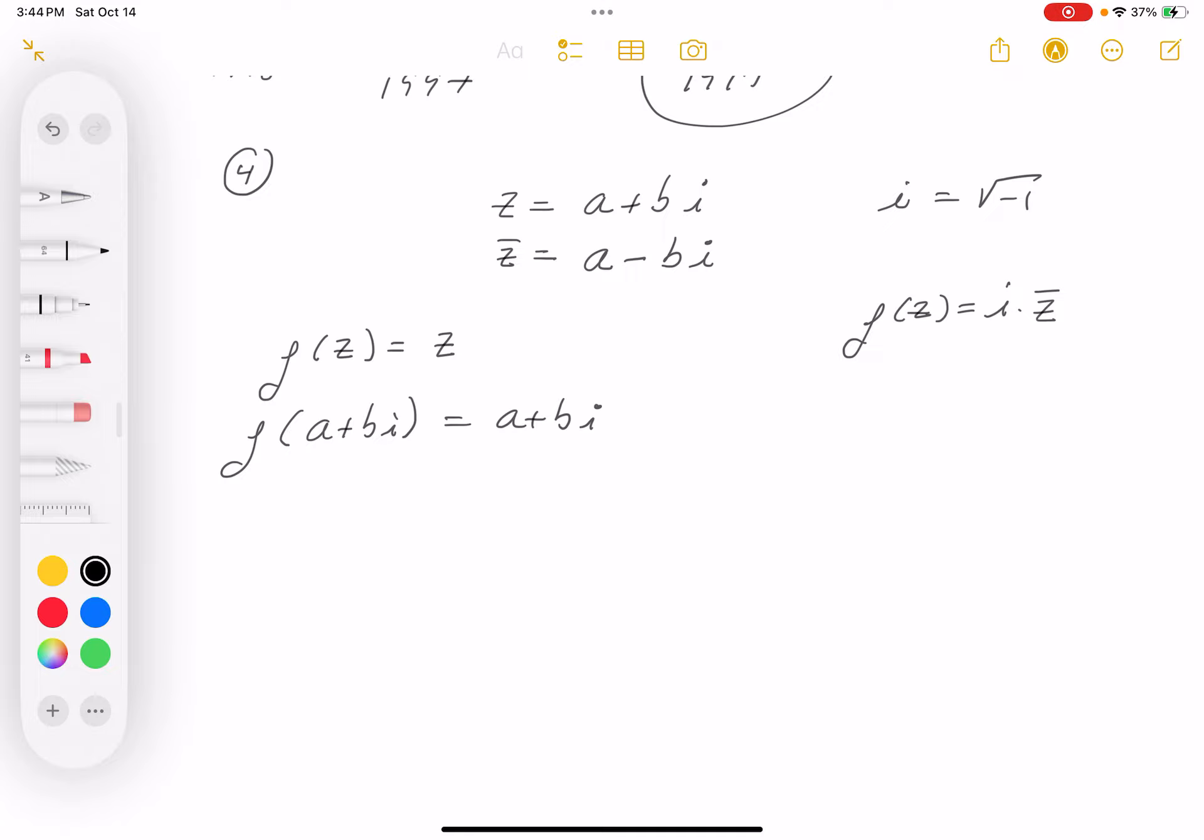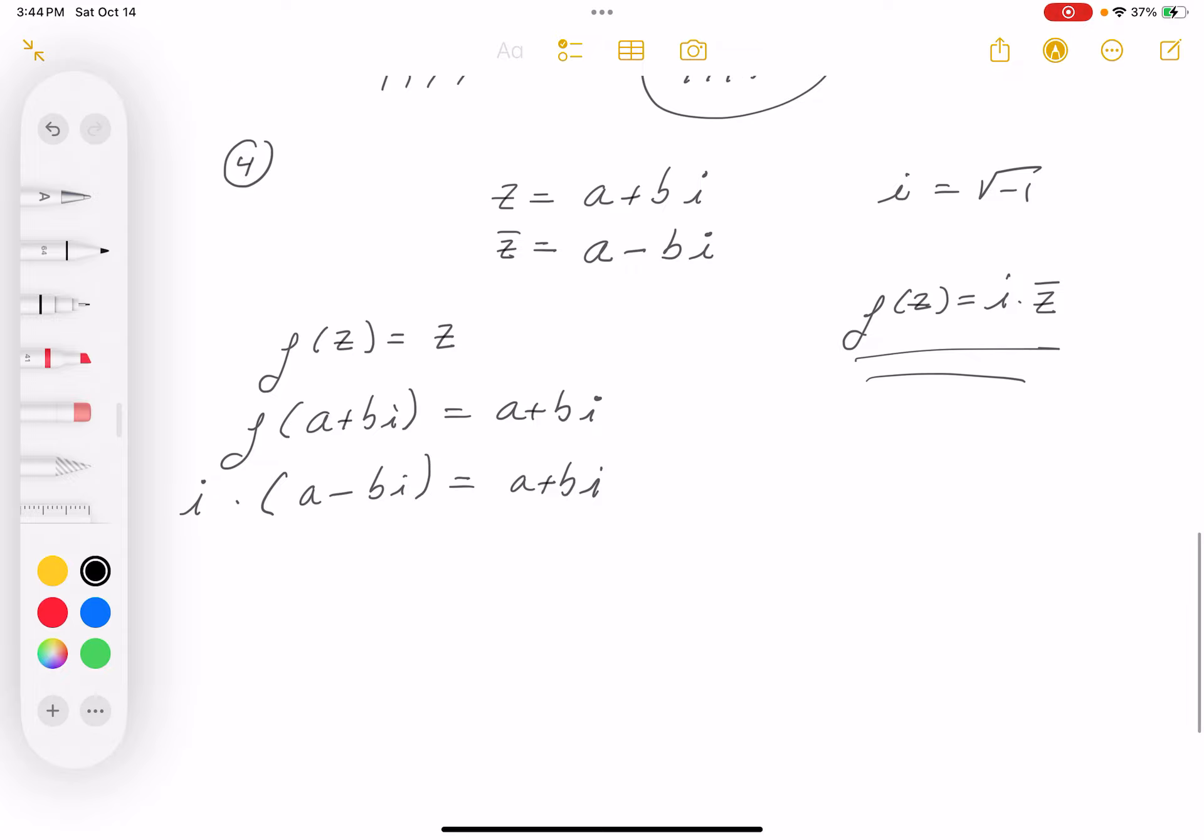They said f of z as a general statement would be i times z bar. So I know that for this given z, the f of a plus bi would be equal to a plus bi. But I'm going to write down that this a plus bi also needs to meet this over here. So it's going to be i times z bar. What's z bar going to be? a minus bi. Let's keep going with that. And what do you get there? You get ai minus bi squared.